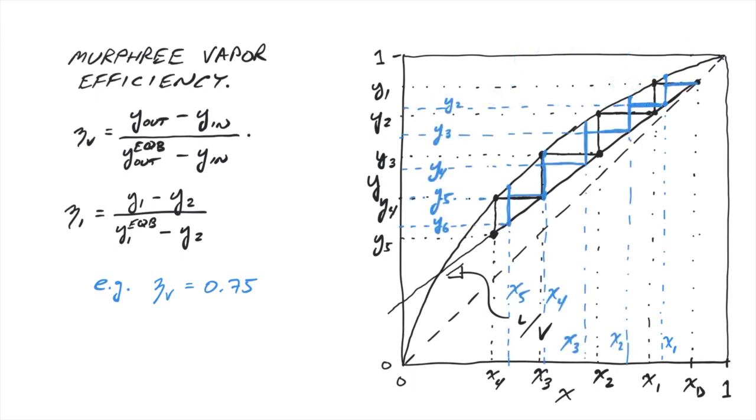Repeating for the other stages, we can see that the values of xi will all shift to the right, such that we need more stages to achieve the same level of purification from a given pot or feed composition.